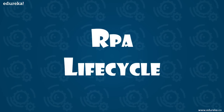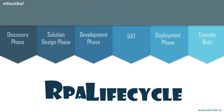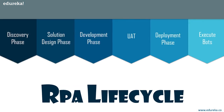Now that you know what robotic process automation is, let's get into the main topic for today's session — the RPA lifecycle. The RPA lifecycle has mainly five stages and an additional stage to execute the bot. The stages are: the discovery phase, the solution design phase, the development phase, the testing phase (UAT), the deployment phase, and finally executing the bots.